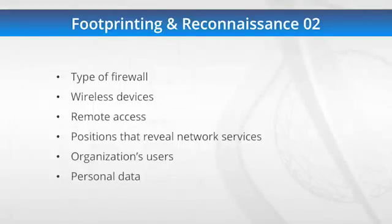We'll find out what types of firewalls are in place, what wireless devices they have, whether they have remote access — just a general overview of where they are and what they're doing. We'll also capture the positions in the organization that reveal network services. For example, if they're hiring a Cisco engineer, they probably use Cisco gear; if they need a Juniper engineer, they're probably running Juniper; if they support Meru wireless, that's likely what's inside. We'll also find out about the organization's users and personal data we can use to gain access.